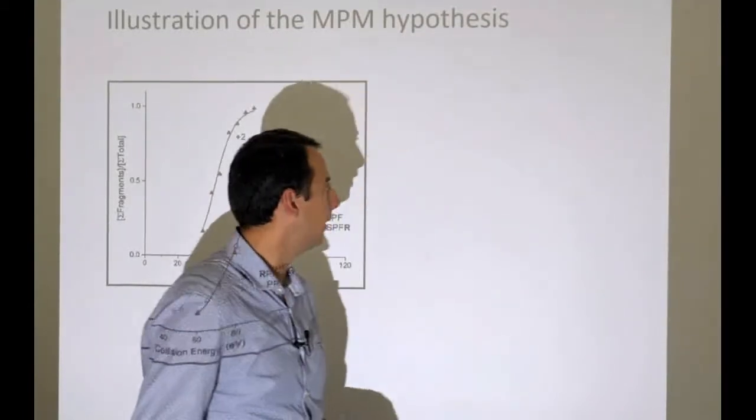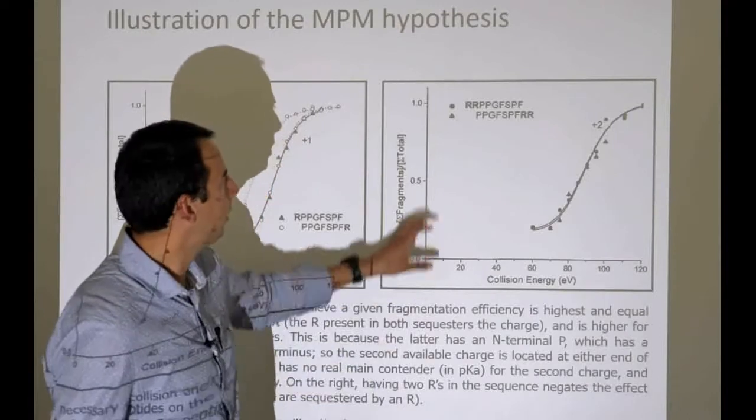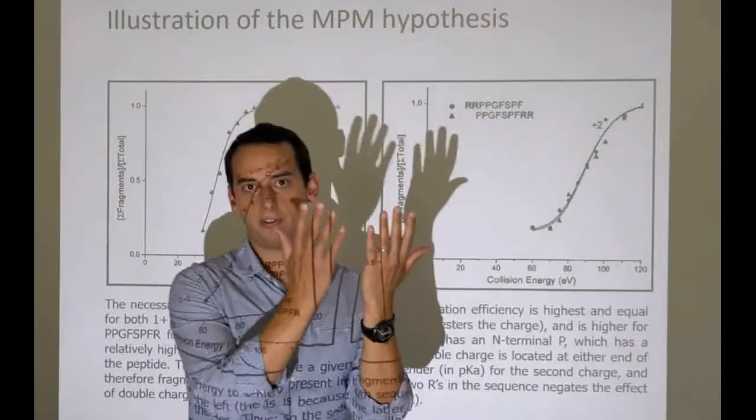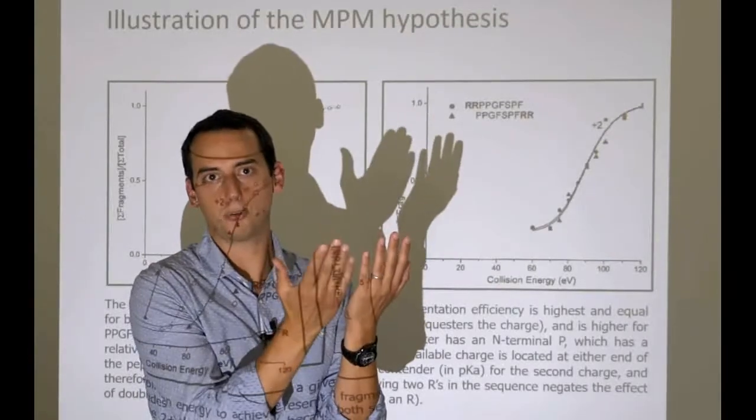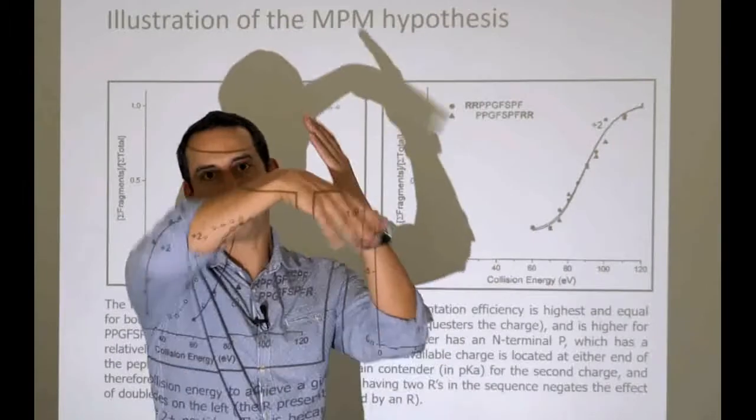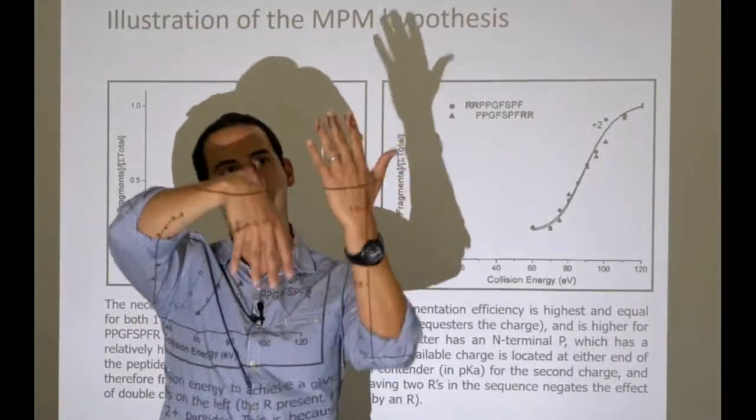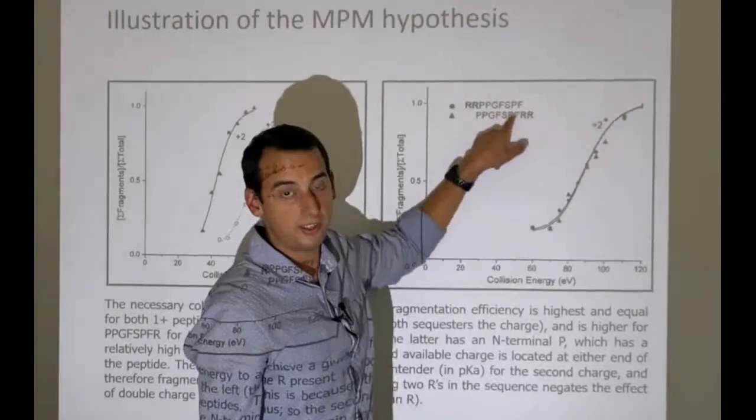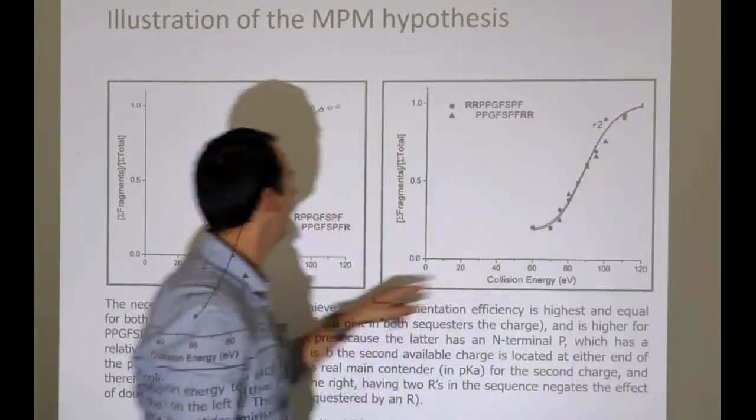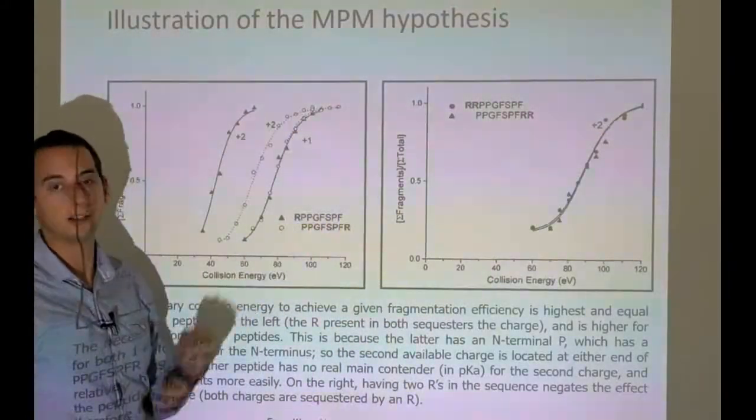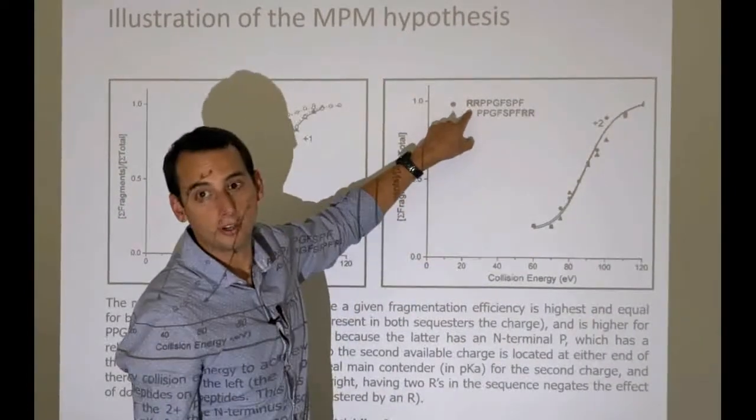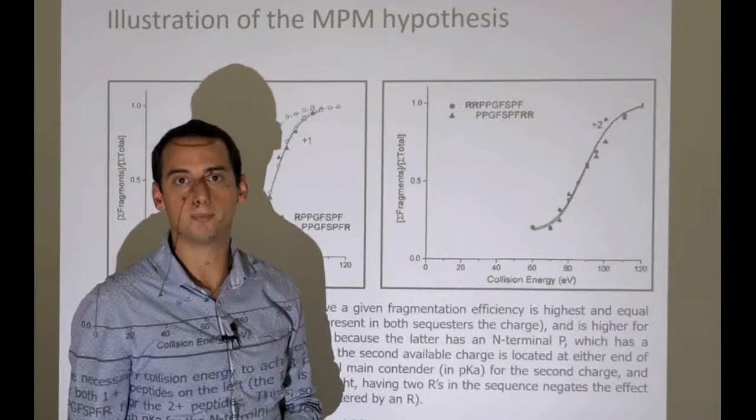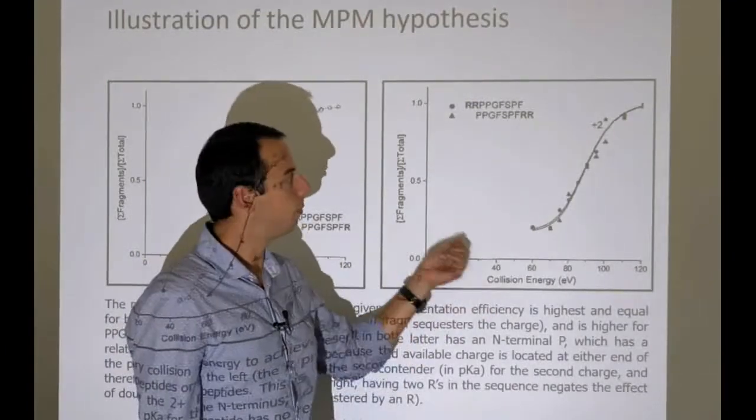The paper goes beyond that and takes the next step: adding an additional arginine. The two arginines are sufficiently widely spaced that each can harbor a proton without repelling each other. As we'd expect, a doubly charged version of these peptides fragments exactly as badly as the singly charged version with a single arginine. One proton lives on the first arginine, the second on the second arginine, and neither sequence has a mobile proton.